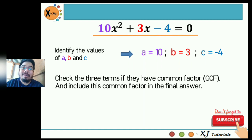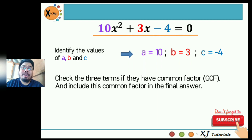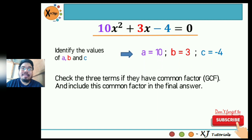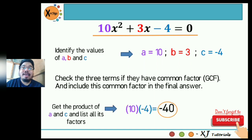The next step is to check the three terms if they have a common factor, or the greatest common factor, and include this common factor in the final answer. So 10x squared, 3x, and negative 4 — it's not x since our constant term doesn't have a variable. For 10, 3, and 4, they have no common factor, so we proceed to the next step: get the product of a and c and list all its factors.